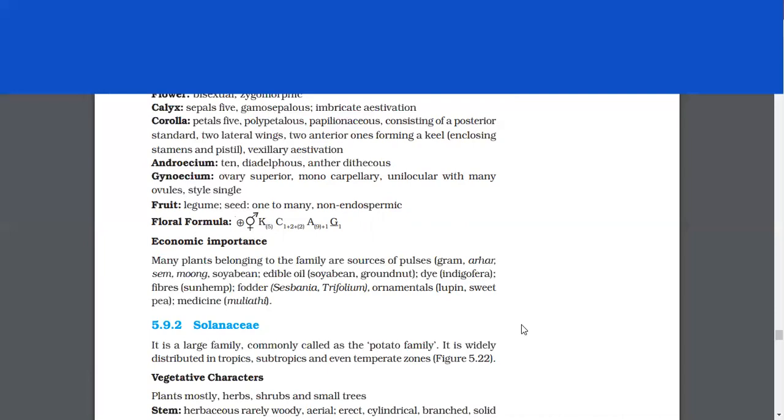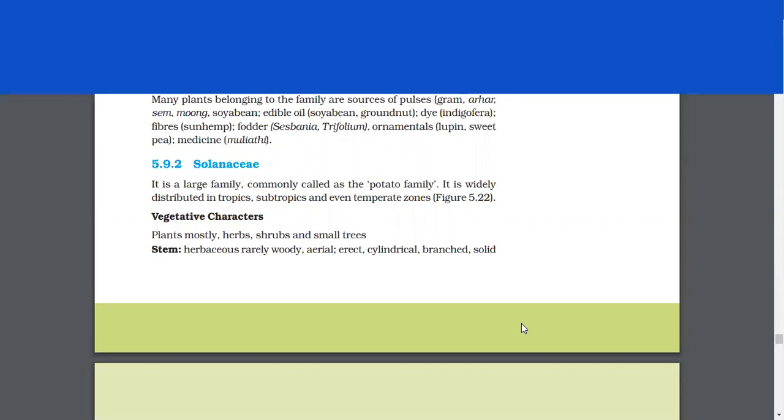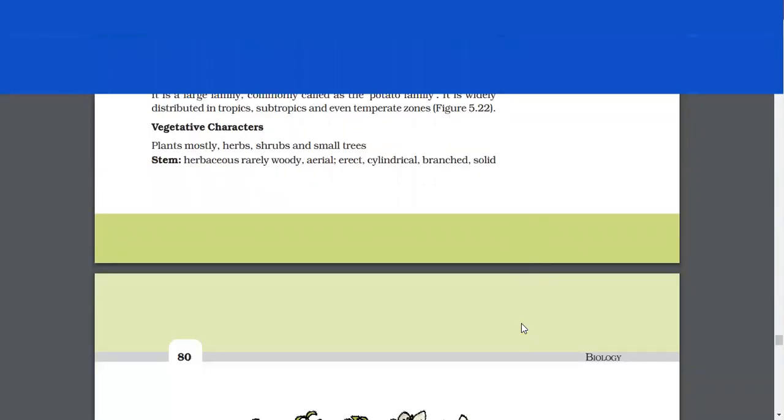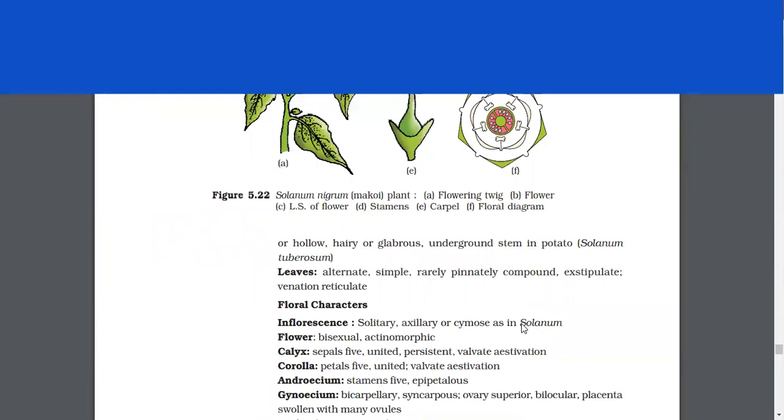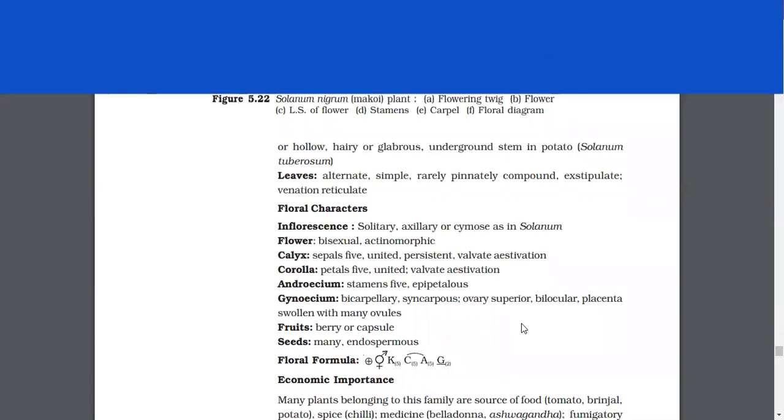Solanaceae. It is a large family, commonly called as the potato family. It is widely distributed in tropics, subtropics and even temperate zones. Vegetative characters. Plants mostly herbs, shrubs and small trees. Stem. Herbaceous, rarely woody, aerial, erect, cylindrical, branched, solid or hollow, hairy or glabrous, underground stem in potato. Leaves alternate, simple, rarely pinnately compound, exstipulate, venation, reticulate.